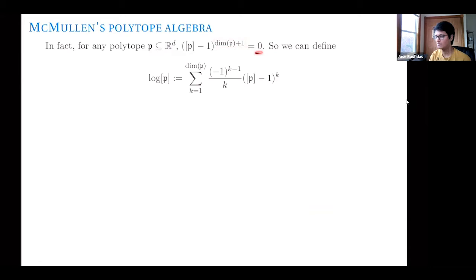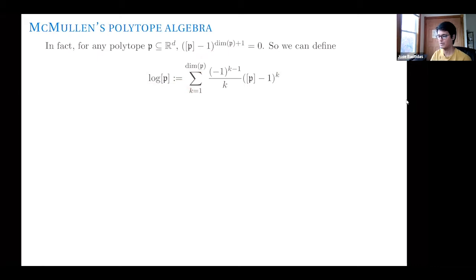We can be more precise about that power. This is nice because we can now define the logarithm of the class of a polytope, which seems like a weird thing to define, but it will be useful. We can define it just by using the usual power series of the logarithm centered at one. Because raising it to a high enough power gives zero, we can take the power series and it will just be a finite sum — so it's a well-defined element in this algebra.